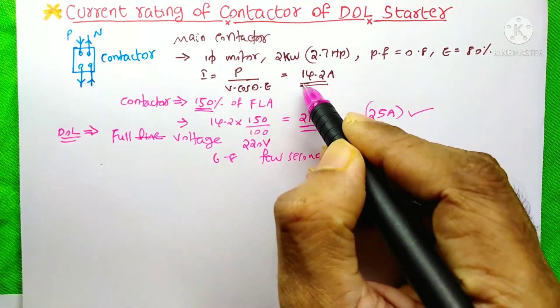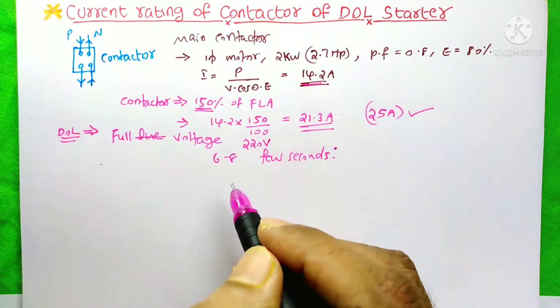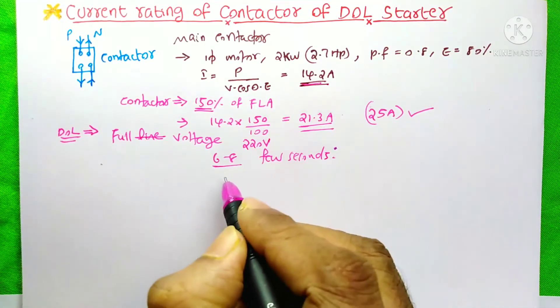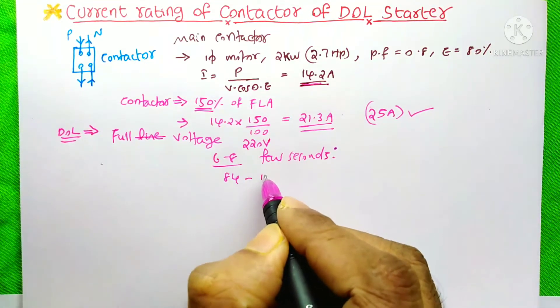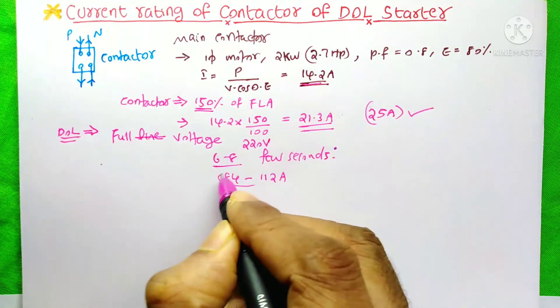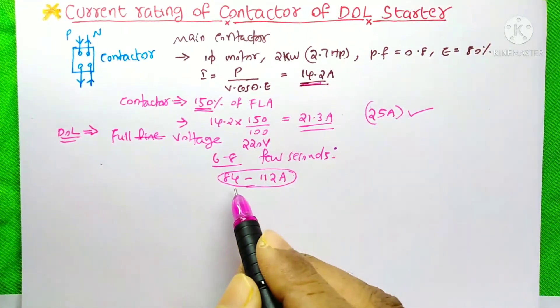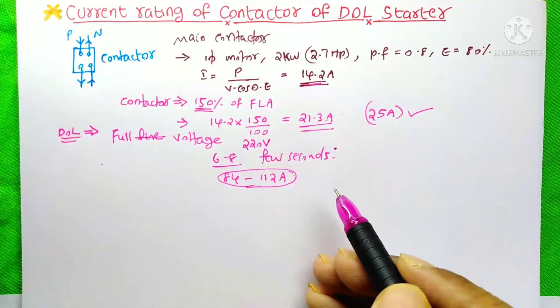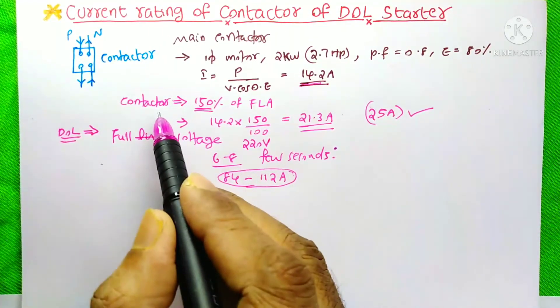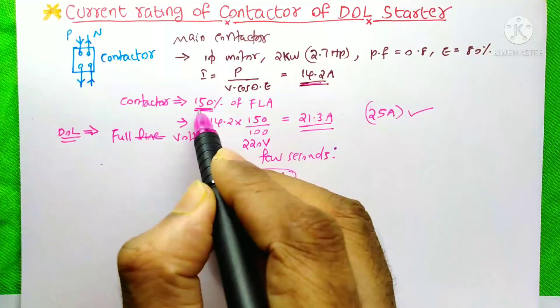In this case, our full load ampere is 14.2A. So its 6 to 8 times is 84 to 112A. It is something huge. So to withstand this high current for a few seconds, we calculate our conductor by taking 150%.